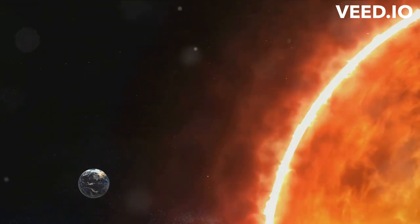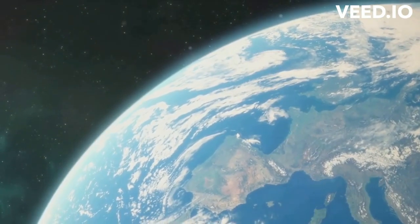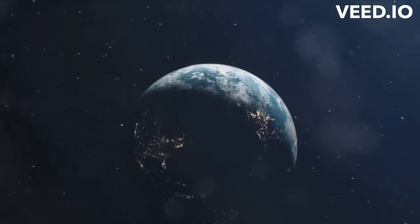But here's where it gets interesting. Why doesn't the Earth, feeling this strong pull, simply crash into the Sun? That's where orbits come into play.